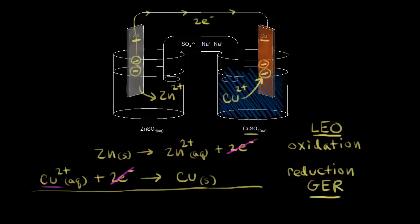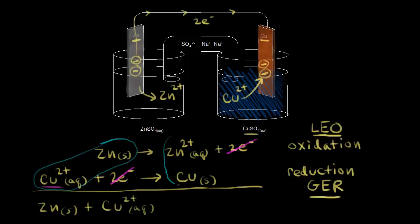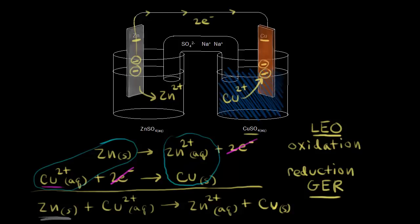For our reactants we have solid zinc and copper two plus ions; for the products we have zinc two plus ions in solution and solid copper. Over time, we lose zinc from the zinc electrode and gain copper deposited on the copper electrode. This is the spontaneous redox reaction creating an electric current through the flow of electrons in the wire.